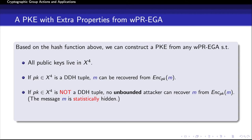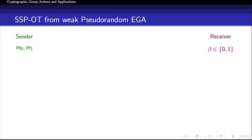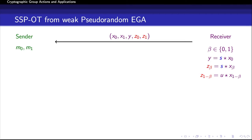Given a public key encryption with the mentioned properties, I describe a construction of a two-message SSPOT protocol, following the blueprint of the DDH-based protocol from Naor and Pinkas. The receiver has bit beta and the sender has two messages M0 and M1. The receiver first samples two set elements X0 and X1, samples a group element S, and sets Y to be S star X0. It also sets Z_beta as S star X_beta. The receiver sets Z_{1-beta} as U star X_{1-beta} where U is a uniformly chosen group element. It sends the tuple (X0, X1, Y, Z0, Z1) to the sender. If beta is 0, the first four components form a DDH tuple; otherwise, the first three along with the last component form a DDH tuple.